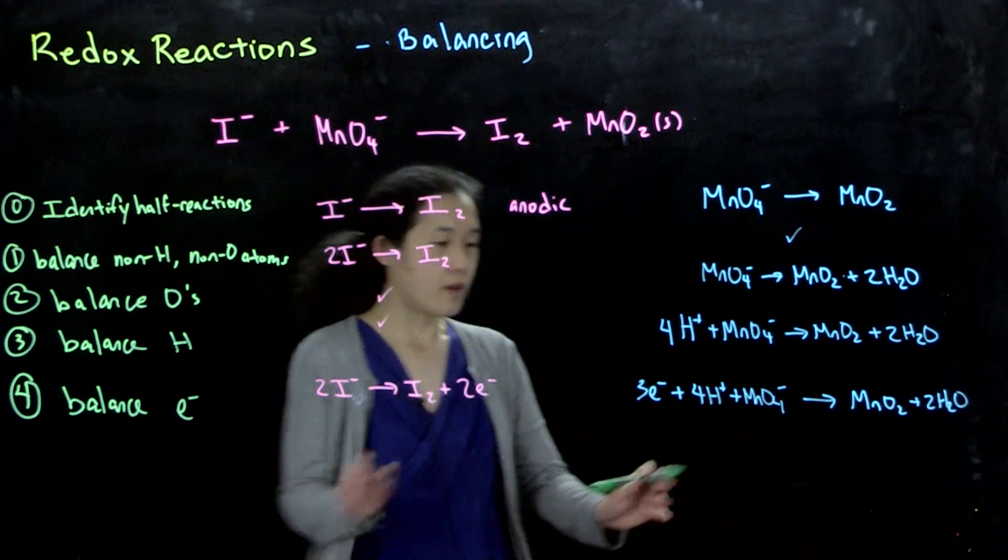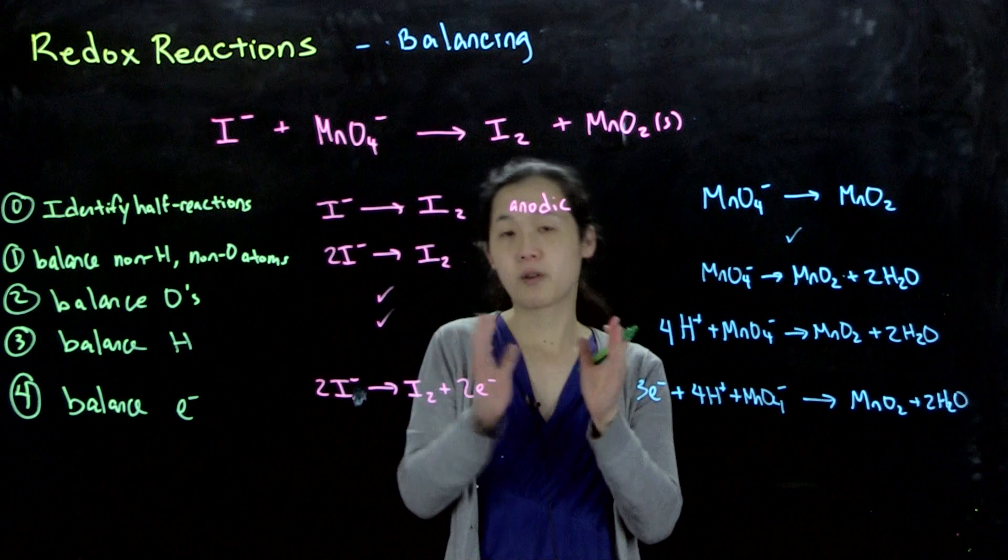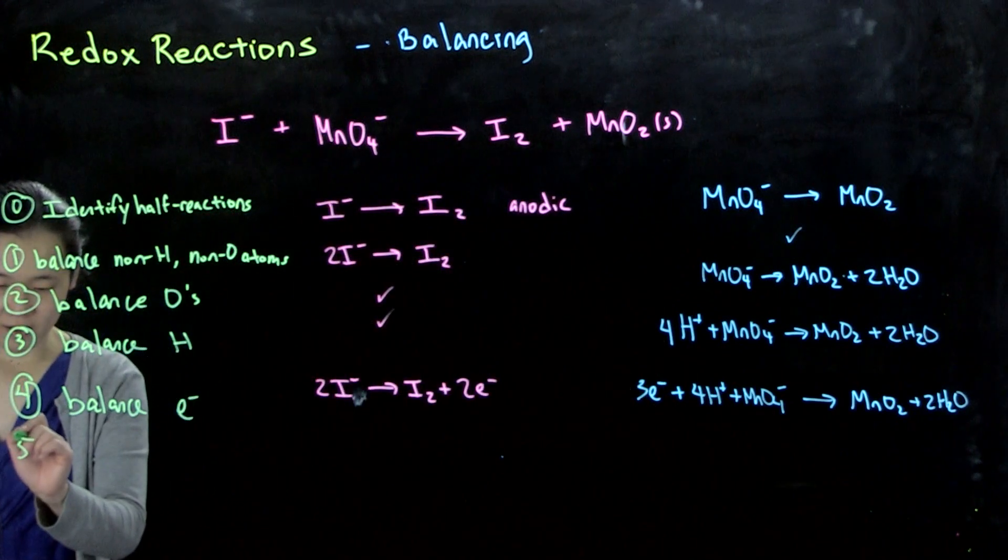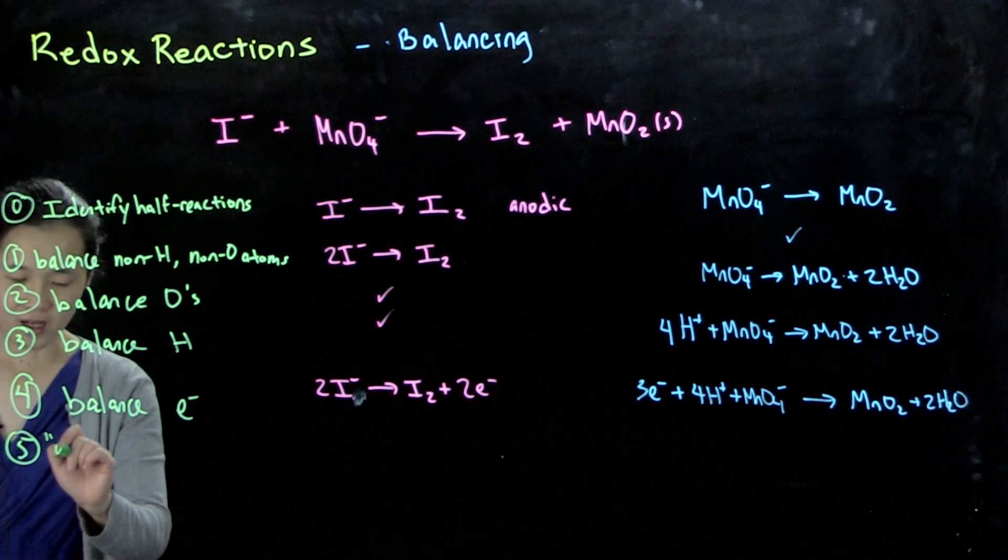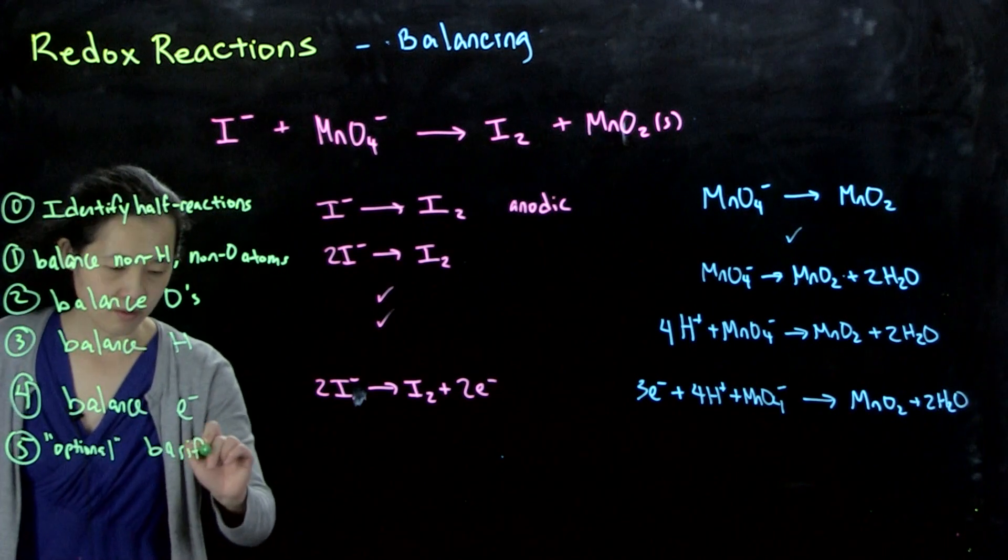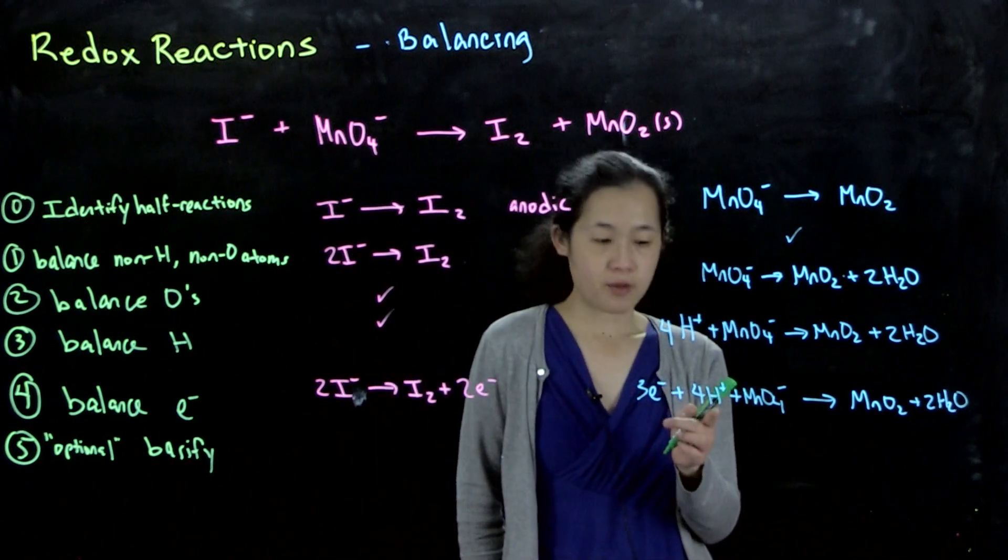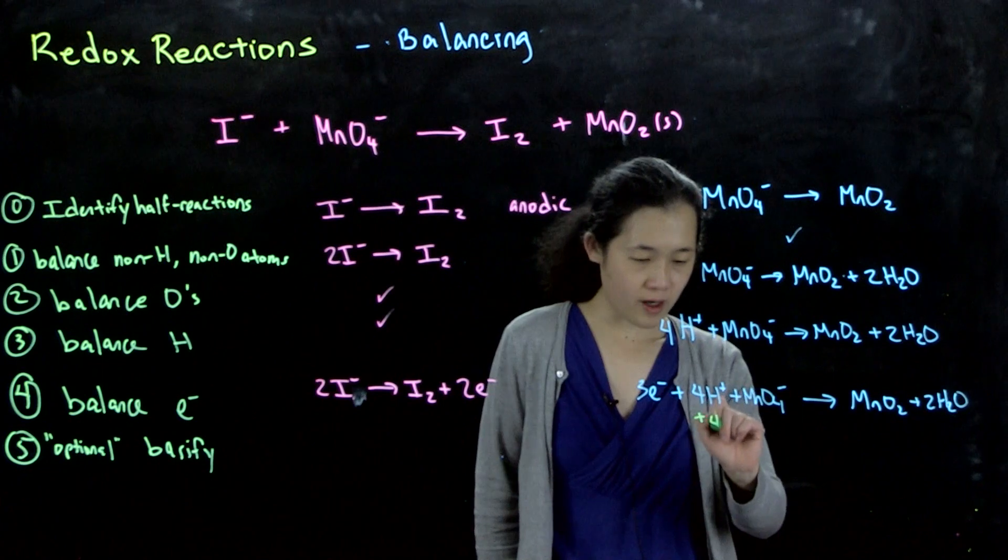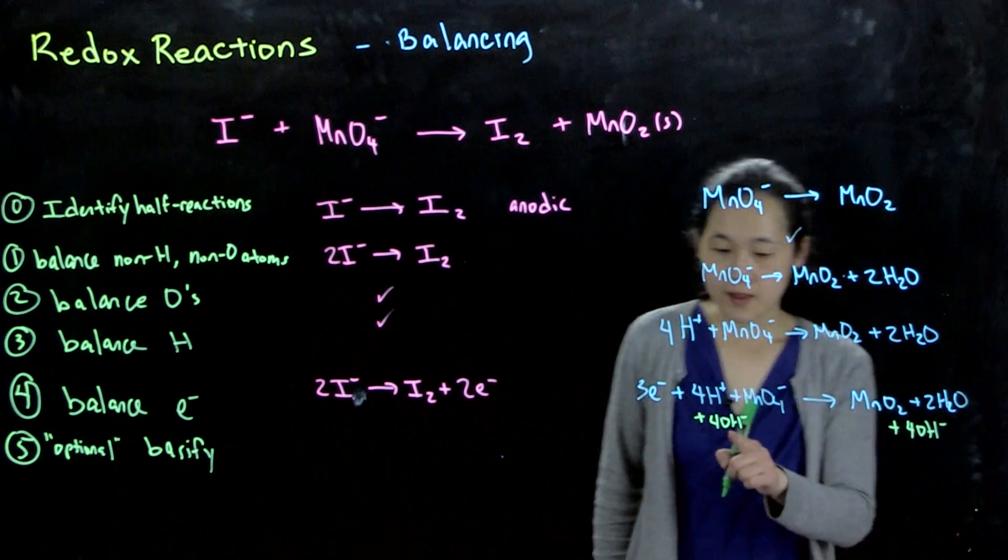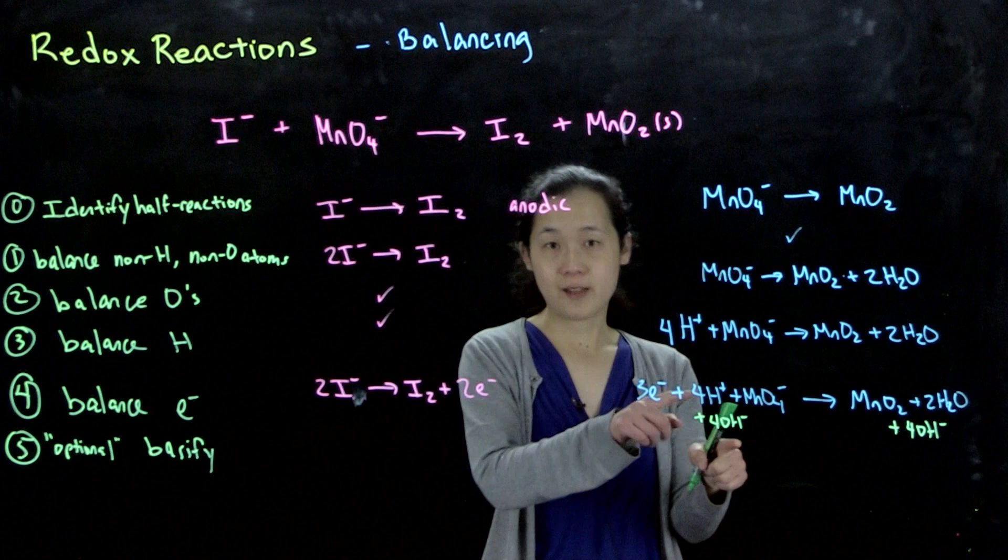And then the last step is optional. You can see here we're adding protons, but in some cases we're operating at maybe high pH where it's basic. This fifth optional step - we'll basify it. To basify it, we just need to add hydroxide to eliminate each of these protons. So we'll add four hydroxide (OH⁻) to each side. Then four hydroxide plus four protons will make four molecules of water.